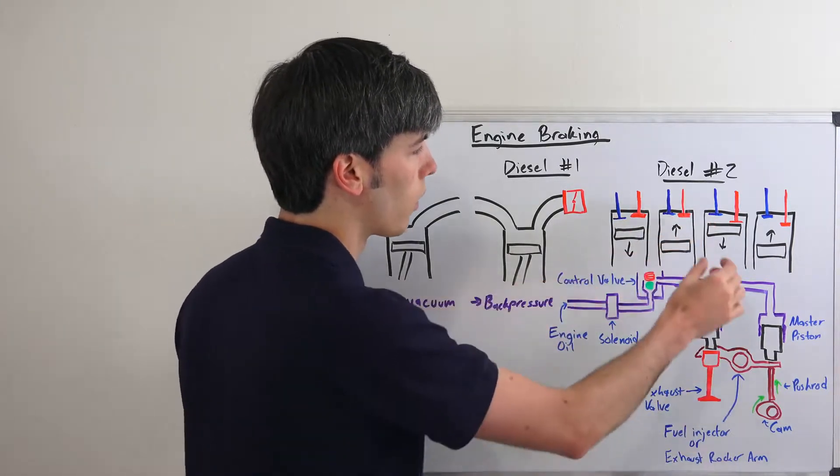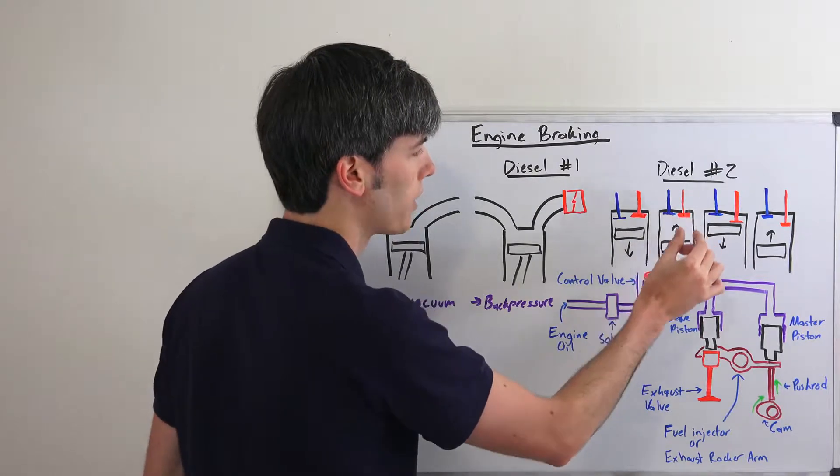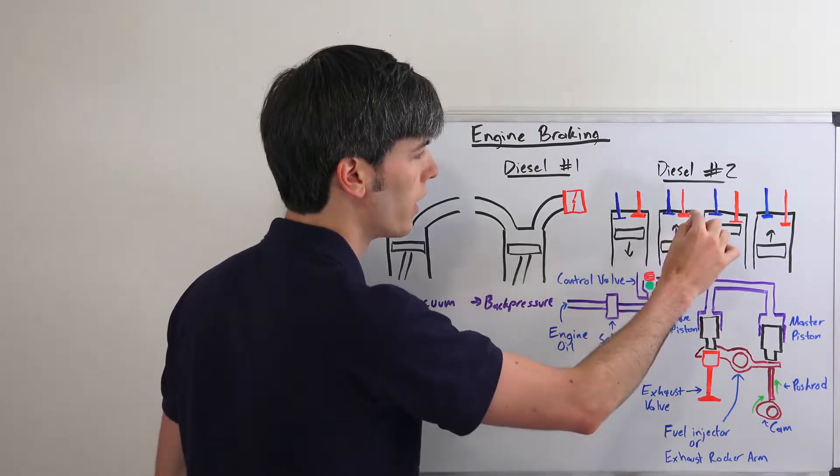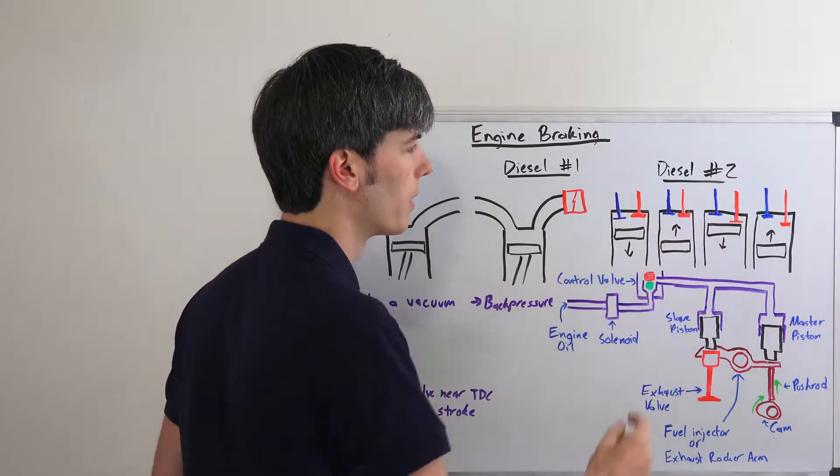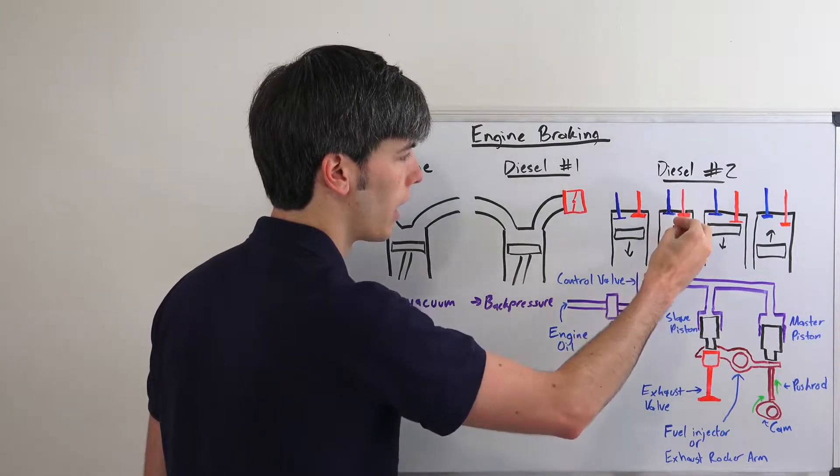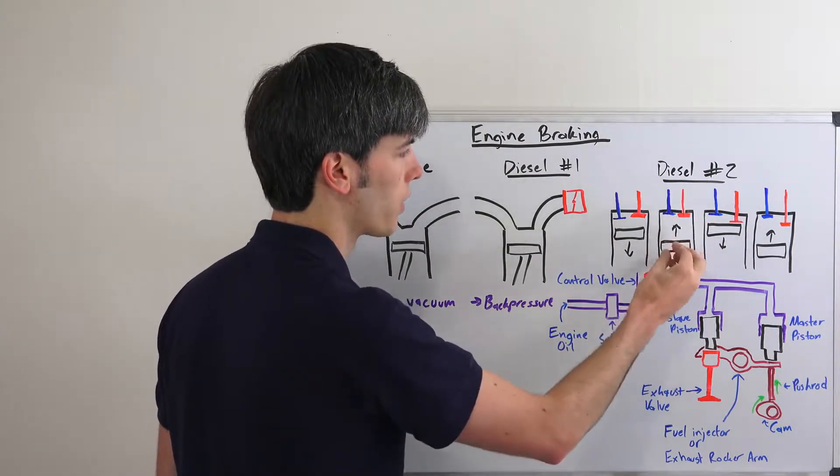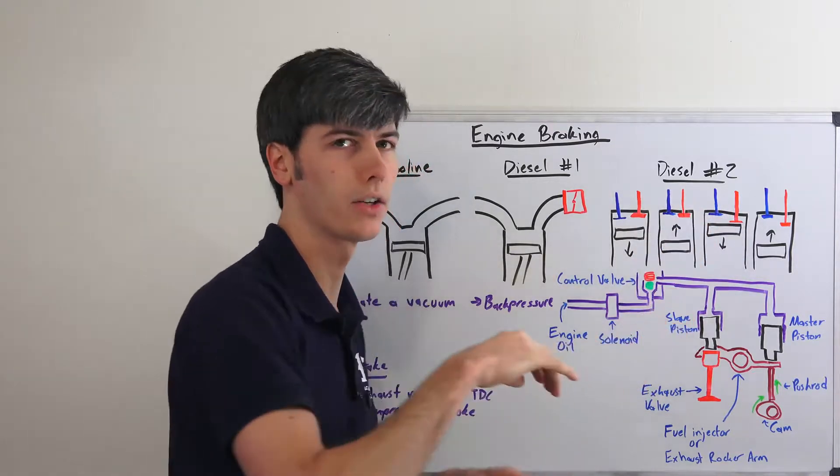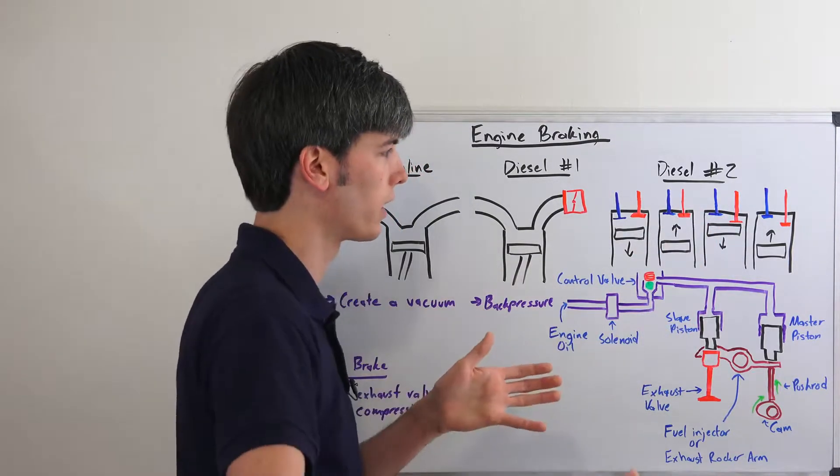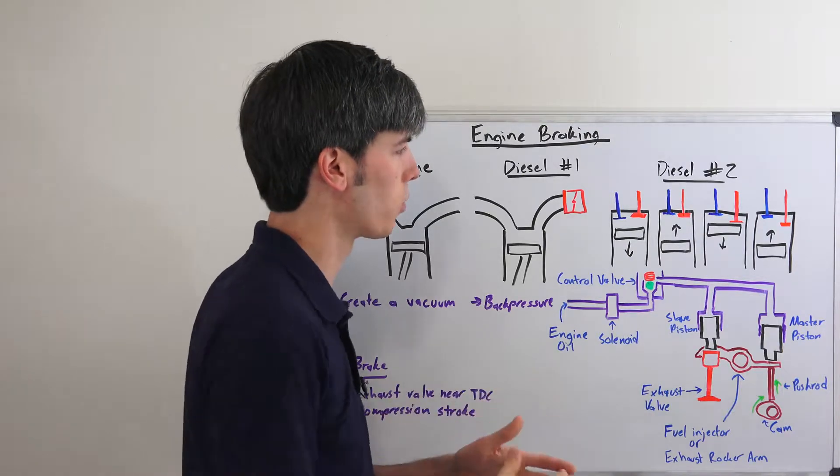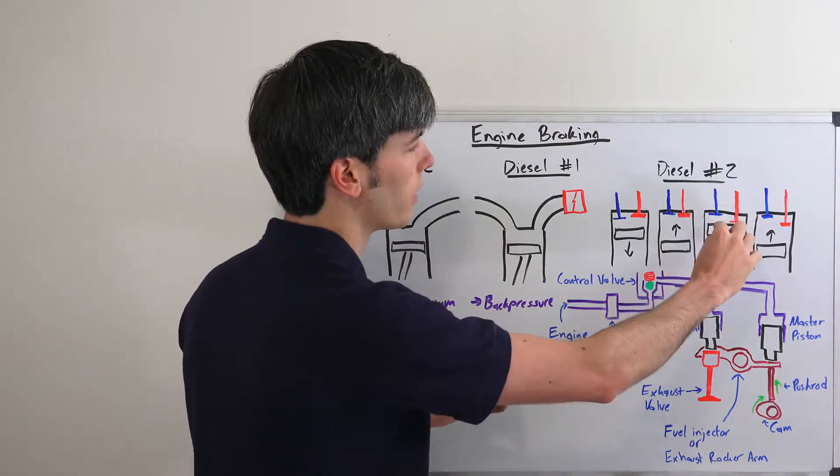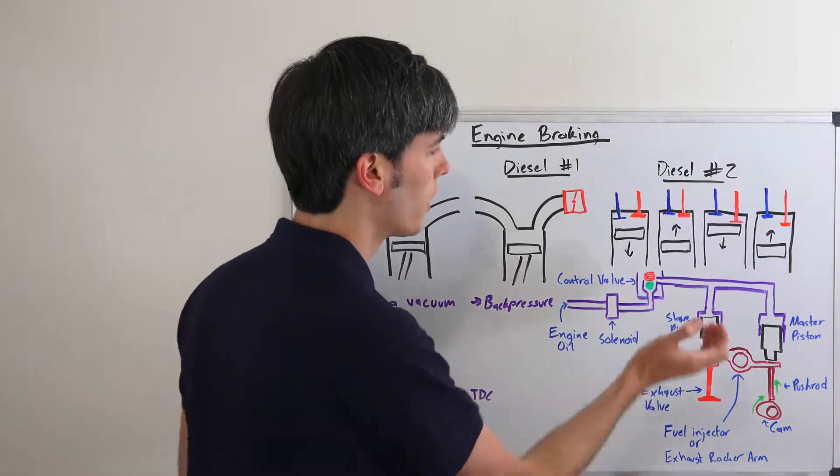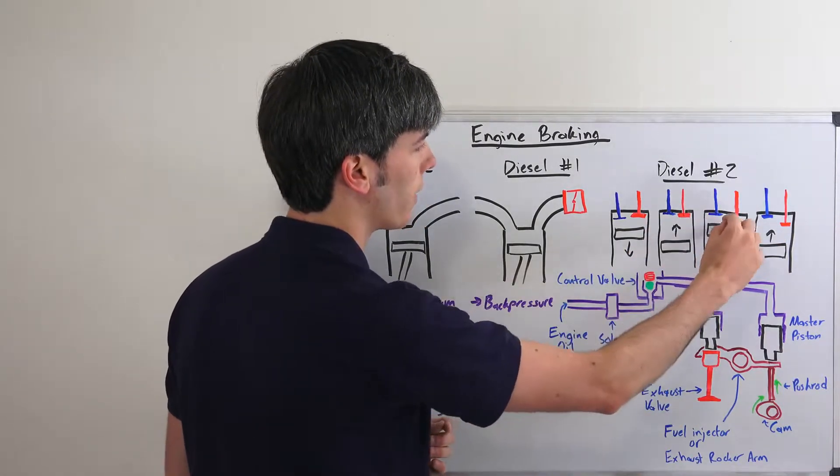and then right when you get to top dead center in the compression stroke, your exhaust valve is going to open up. So instead of that combustion mix pushing down, you've got all that pressure that's been built up in there, and now instead of that pressure going back into the engine and rotating it and thus providing torque back to the wheels,